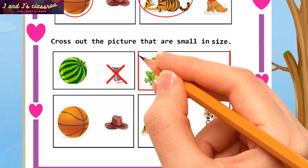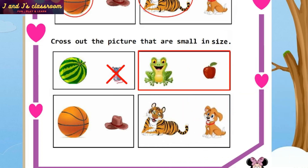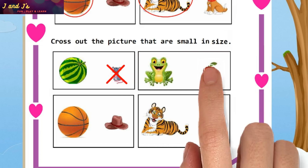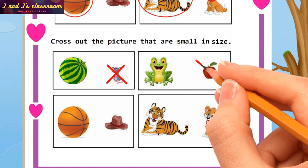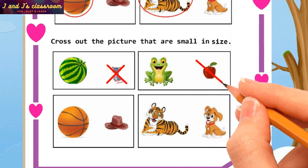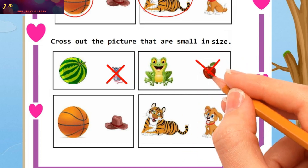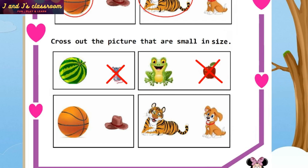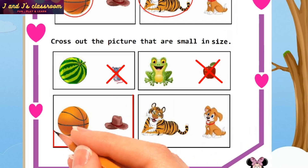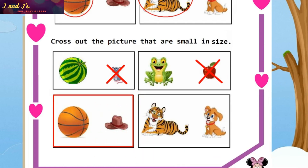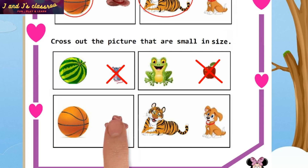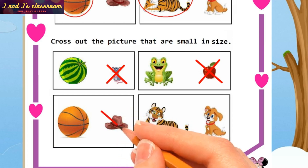See the next box — frog and an apple. Which one is small? Apple! Cross out the apple. The next — ball or hat. Which one is looking small? Hat! Yeah, cross out the hat.